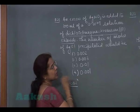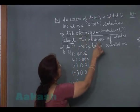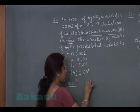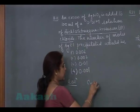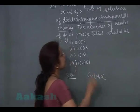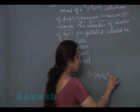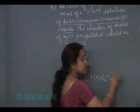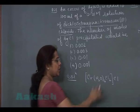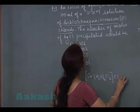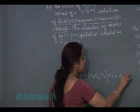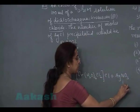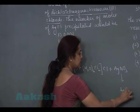Let us solve the question. In this question the complex given is dichlorotetraequa. So this is chromium, 4 ligands H2O, 2 chlorine, and 1 chlorine is outside of the ionization sphere.